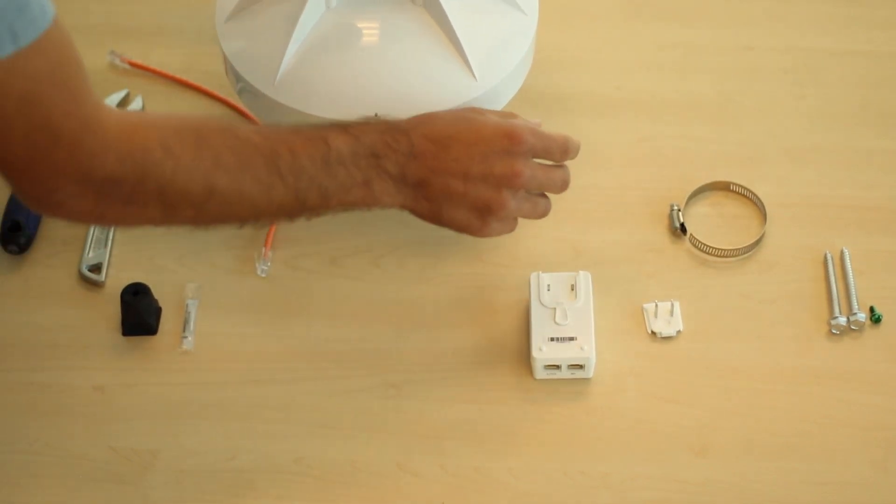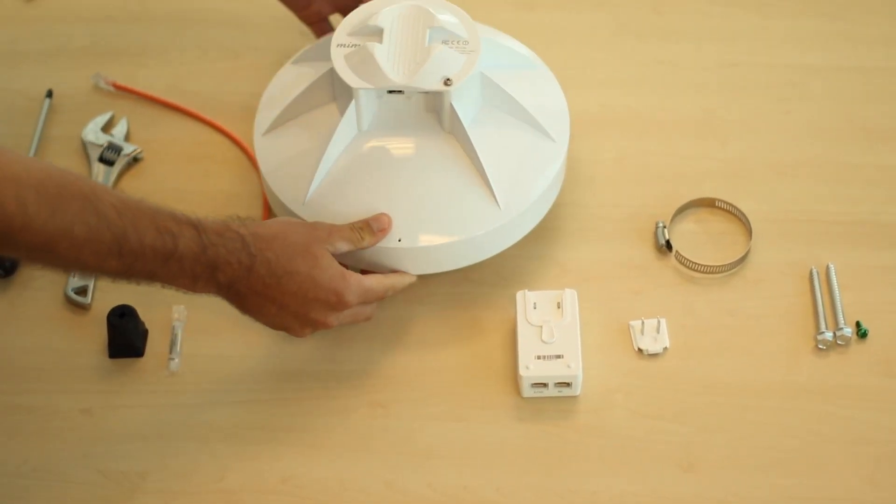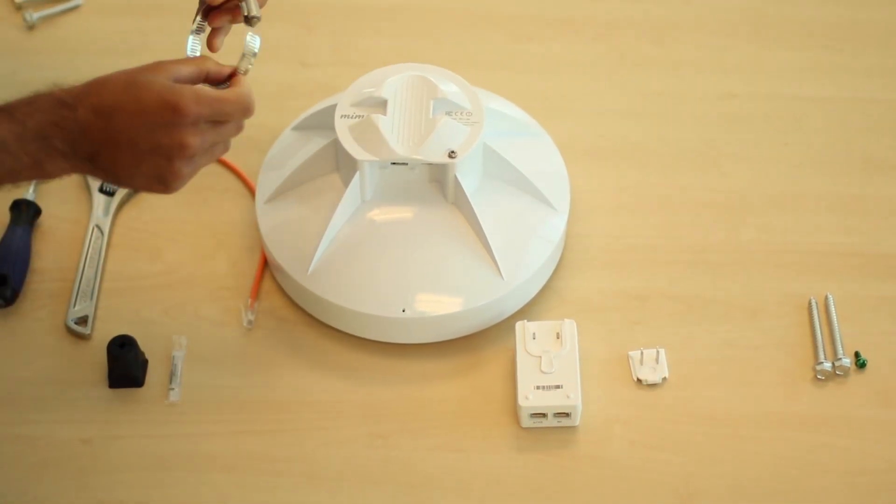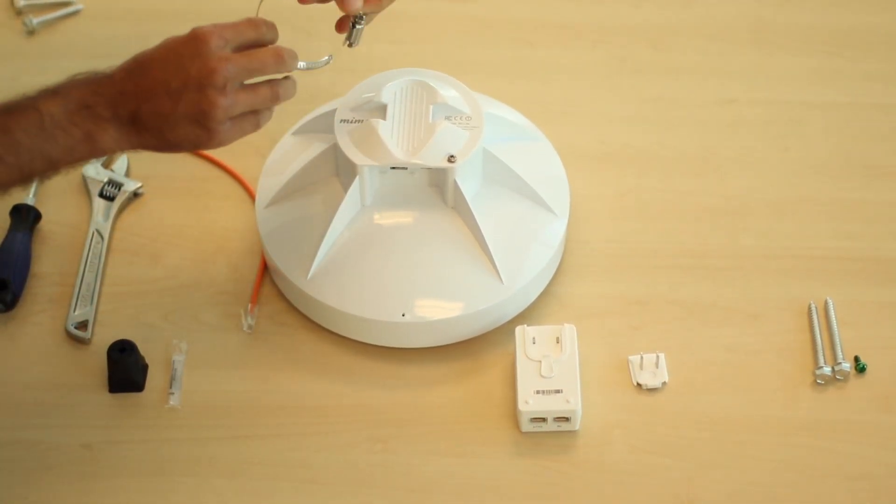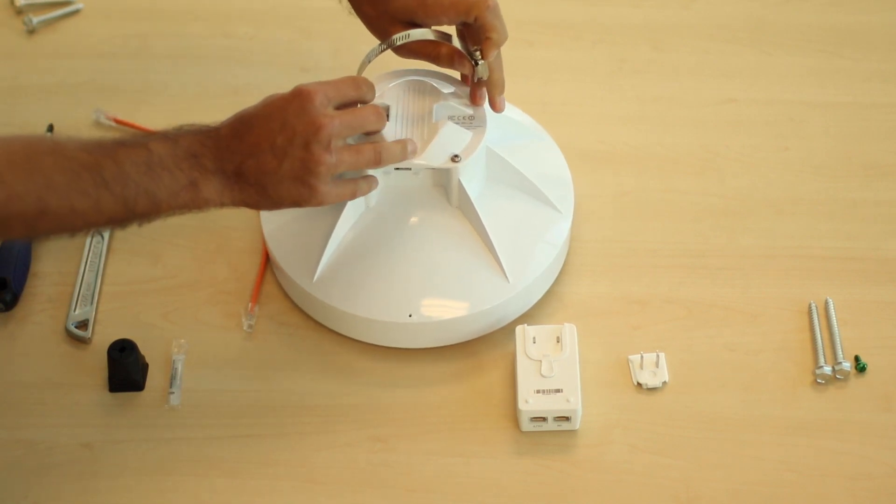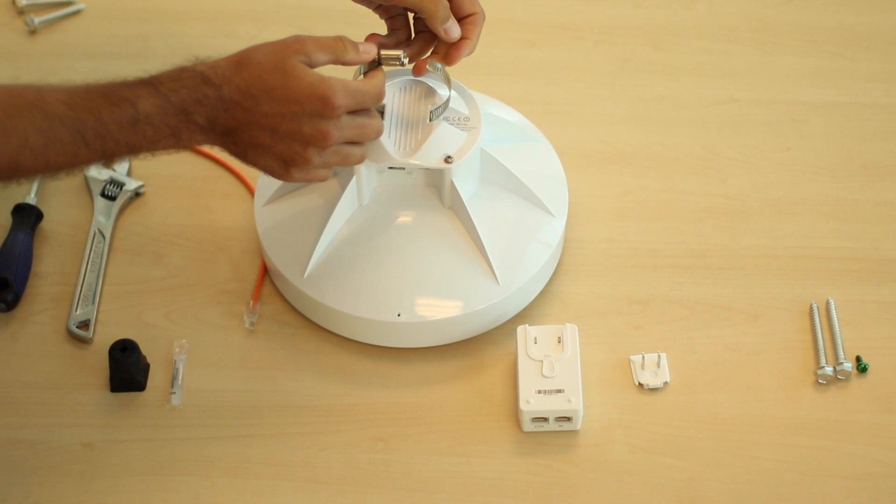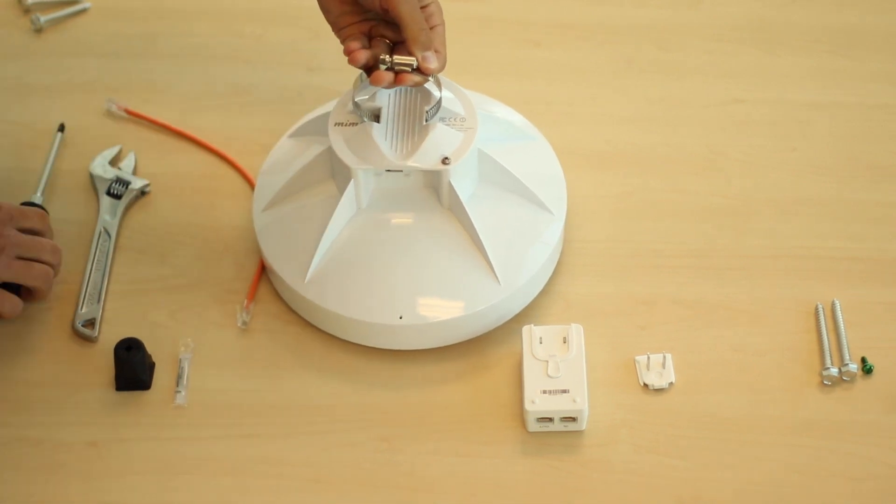Next, prepare the radio to be attached to the mount. On the back of the radio, you can slide the pipe clamp through the slot in preparation for securing the radio to the mount. Use the screwdriver to tighten that clamp such that it will just barely fit over the mount.